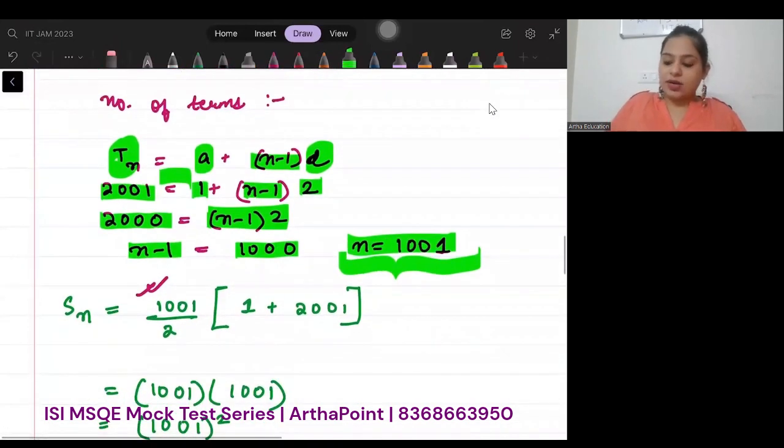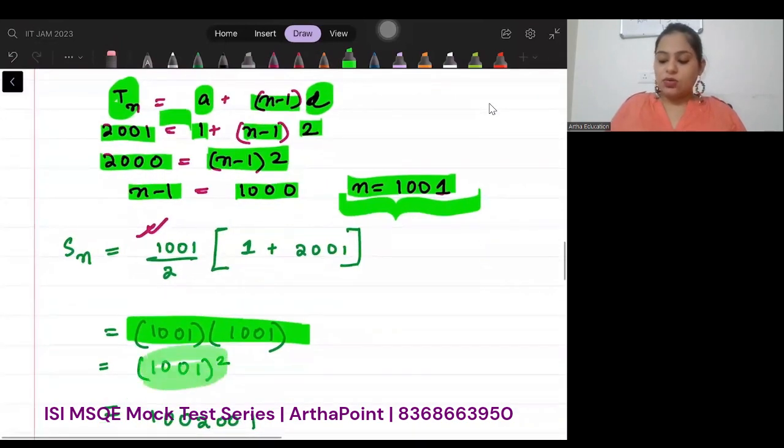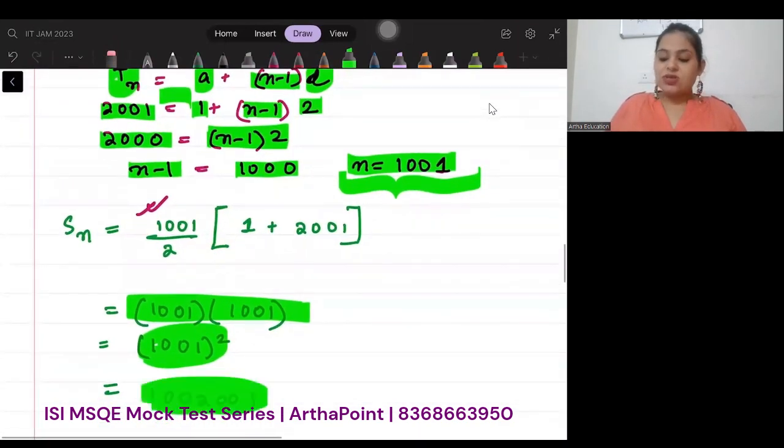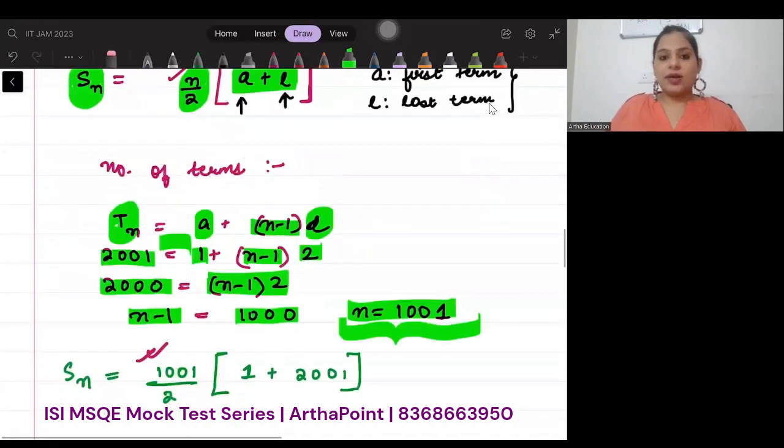So I will get 1001 into 1001, and that will give me 1001 whole square, which will be 1002001.